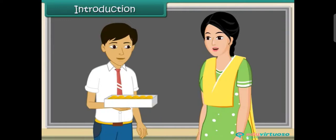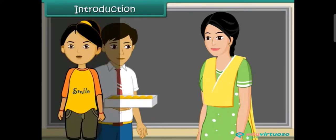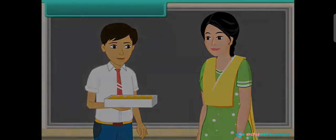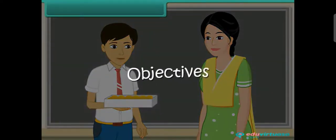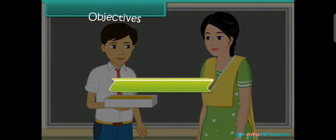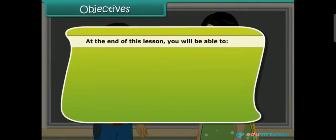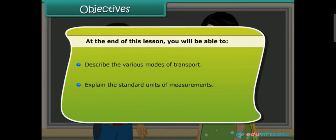Let us look at some modes of transport used in the early days. In this lesson, we will learn about the various modes of transport, the measurement of distance, and the types of motions. At the end of this lesson, you will be able to: describe the various modes of transport, explain the standard units of measurements, and describe the types of motions.